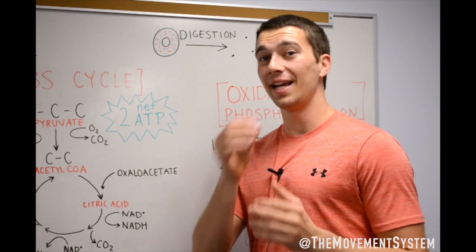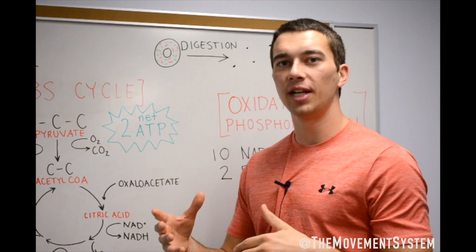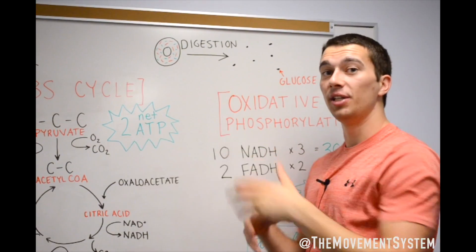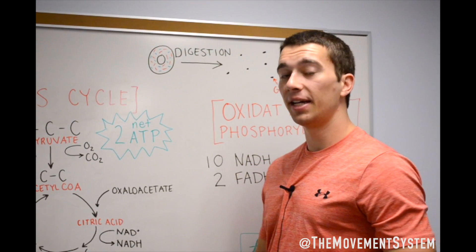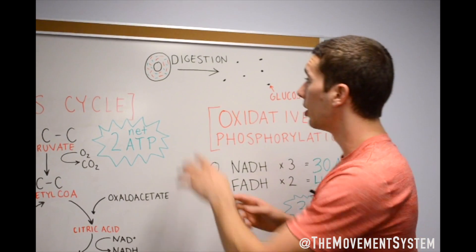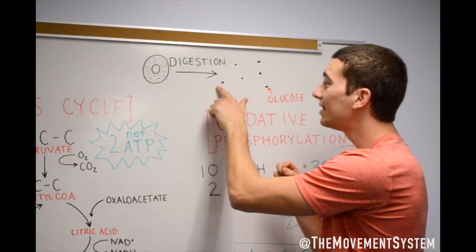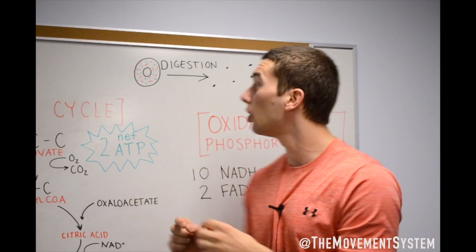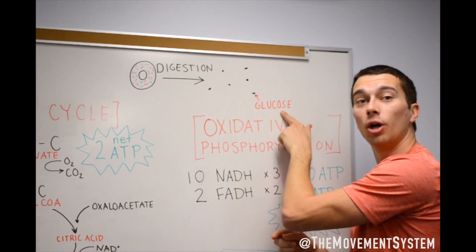So you just ate a donut and now you want to go for a run and use energy. That's what we're explaining right here. We just ate a donut and we digested it. It went through the stomach into the small intestines and it grinded up into these little small pieces and then those went into the bloodstream. Those little tiny pieces of donut, that's what we call glucose.